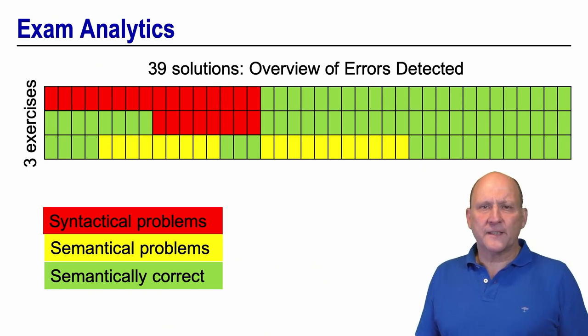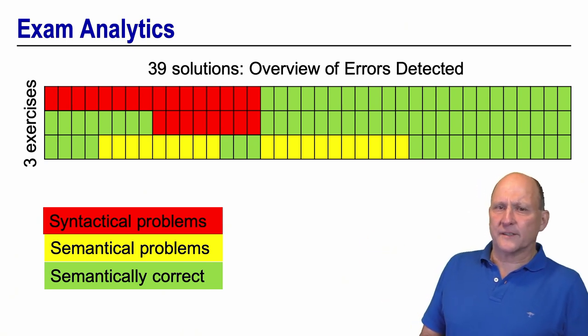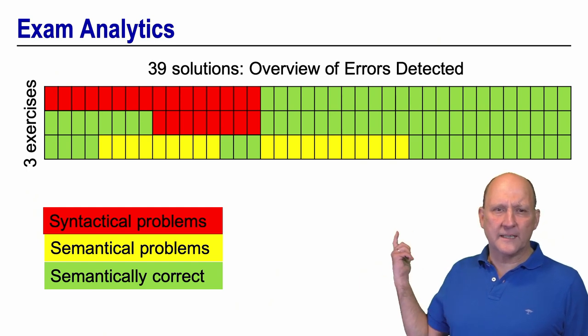And the first thing that surprised us was that a lot of solutions had syntactic errors. These are the red indicated fields here. We had a total of 16 solutions that had syntactical errors, 8 of them on 2 of the 3 exercises. Out of those 23 that did not show syntactical errors, 11 solutions had semantical errors indicated in yellow, and only 12 solutions were semantically correct.